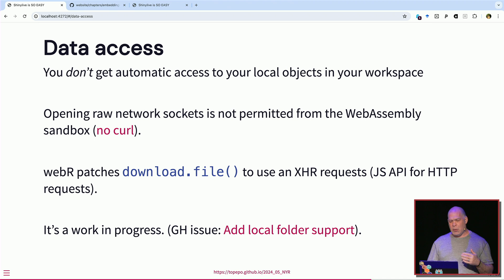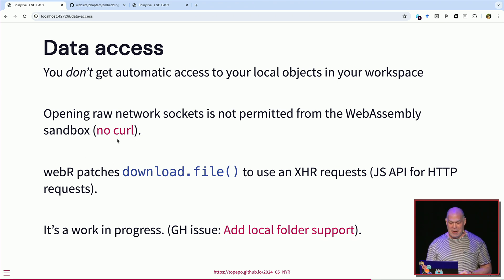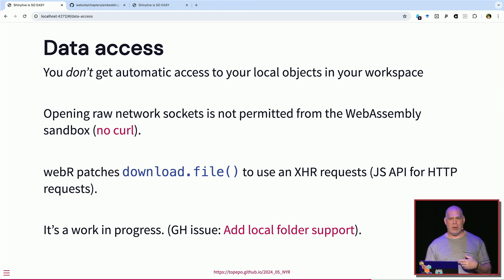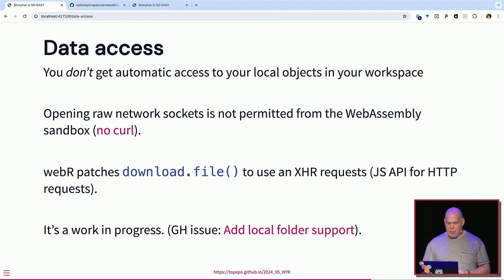WebAssembly doesn't really let you just open a network connection — curl is definitely a no-go. George has patched `download.file` in base R so it will use a separate protocol to get files, and that works pretty well. I keep all my stuff on GitHub in a public repo, so that's simpler for me. This is the main thing that might trip you up: getting data in in a way that Shiny Live and WebAssembly will permit. There's a GitHub issue you can upvote for more details.